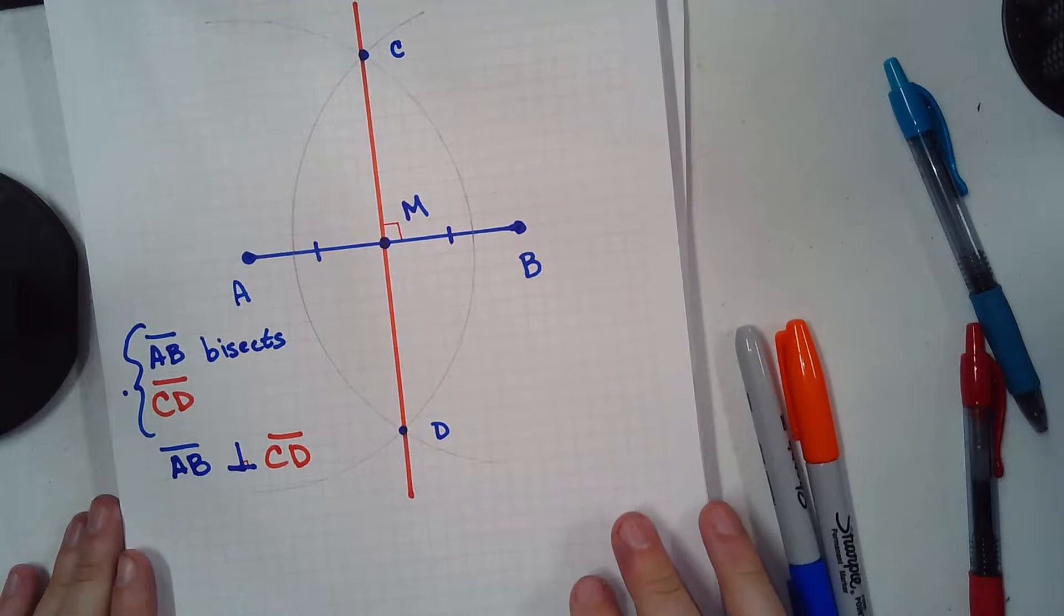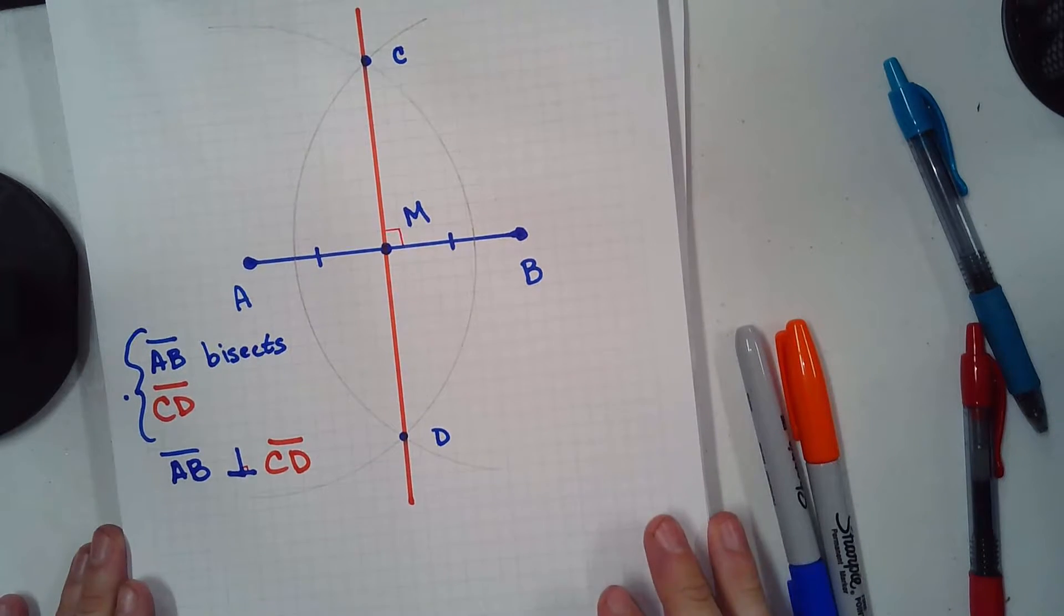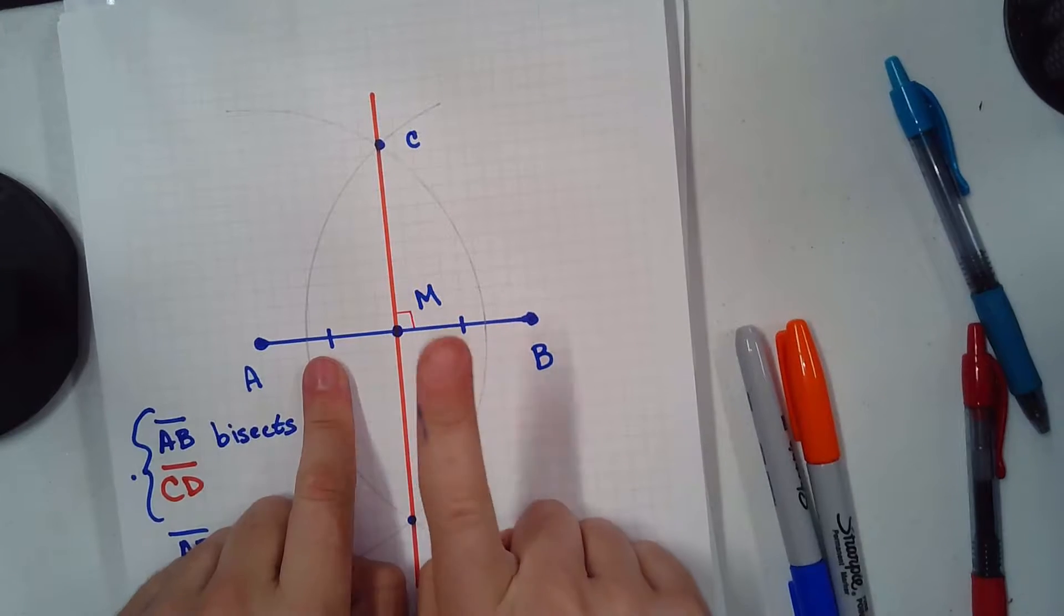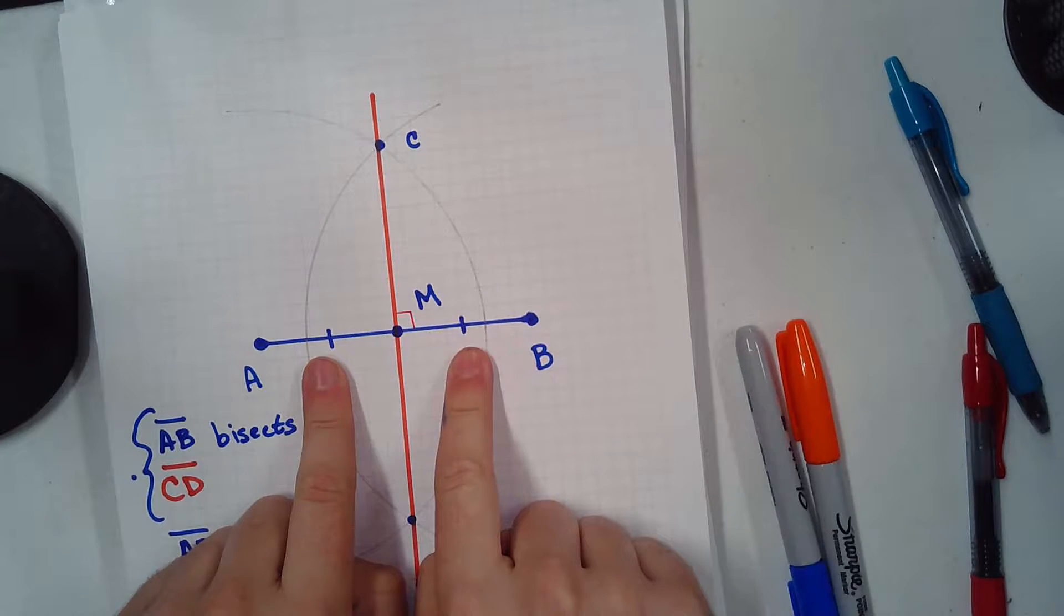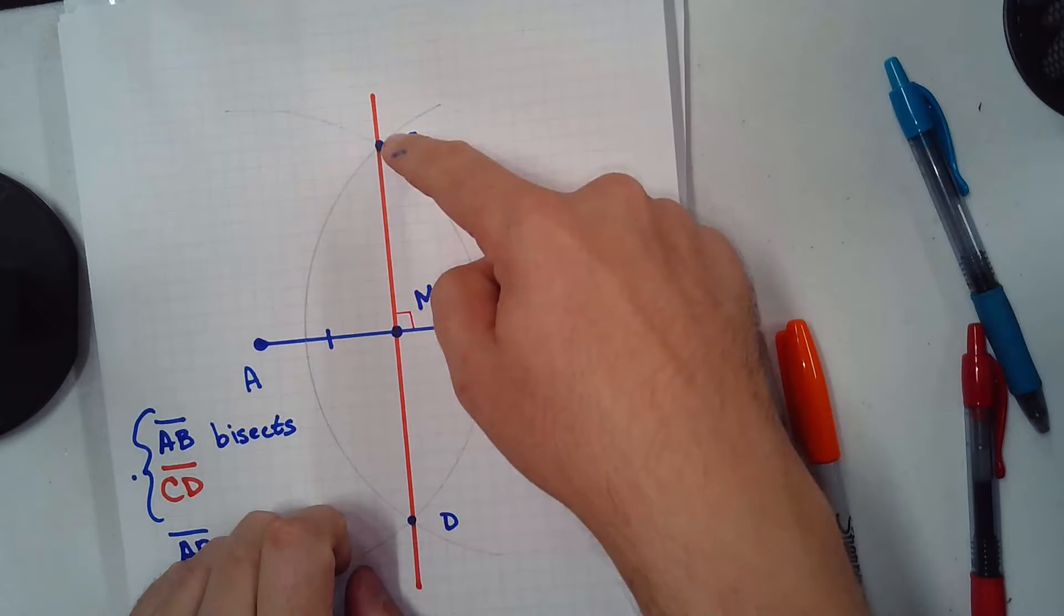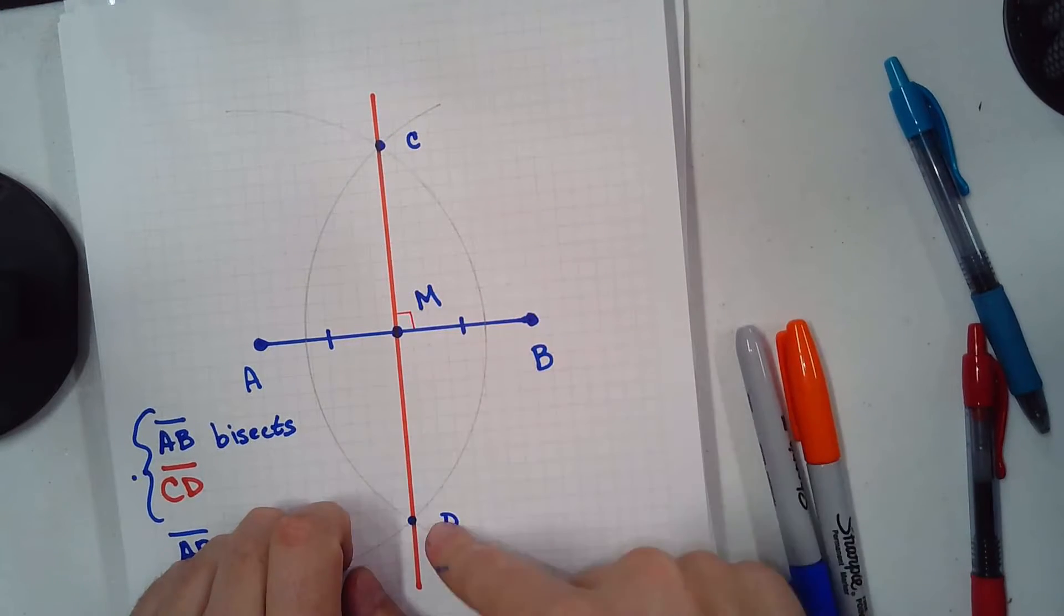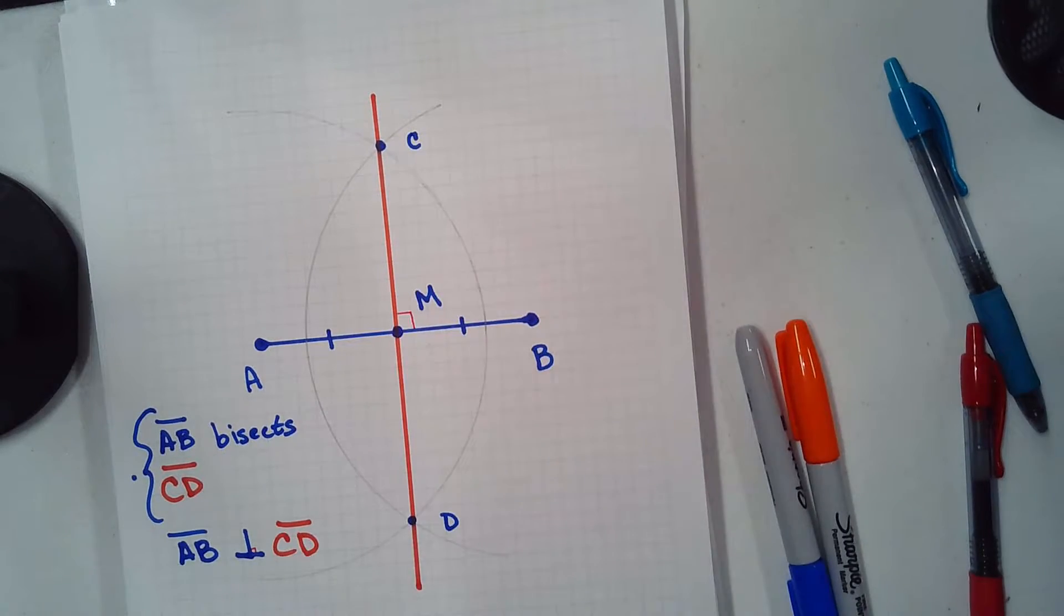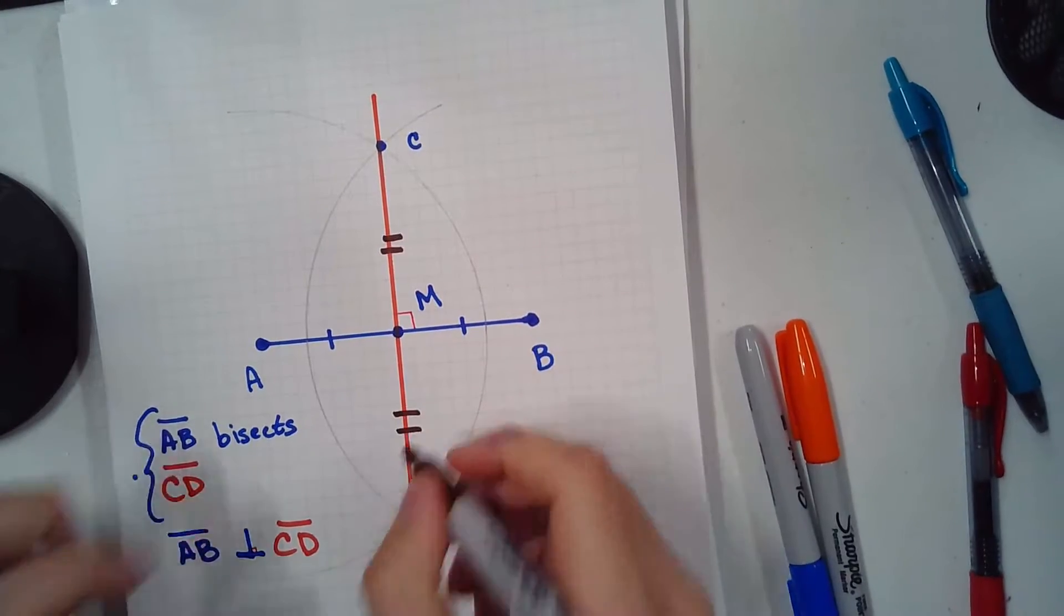So, AB is perpendicular to CD. Now, my question for you is, AB is divided up into AM and BM, right? It's bisected. Is CD bisected into CM and DM? Are these two equal right here? Are they congruent? So, what I'm asking is, is this true? Make a conjecture. Andre says yes.